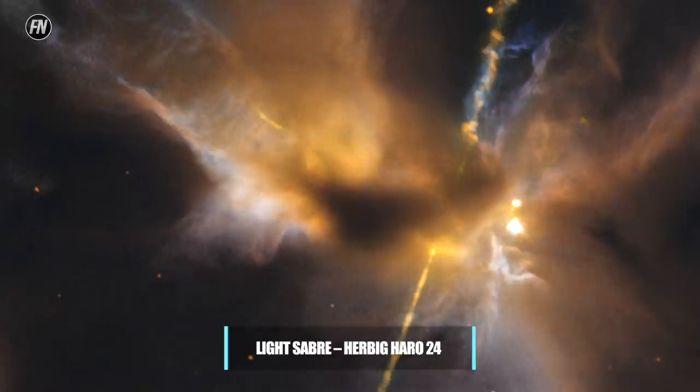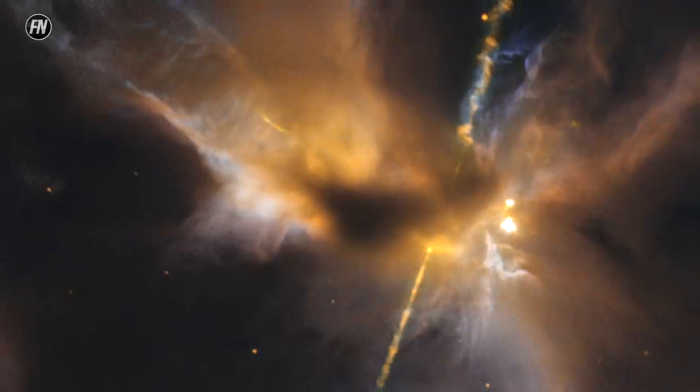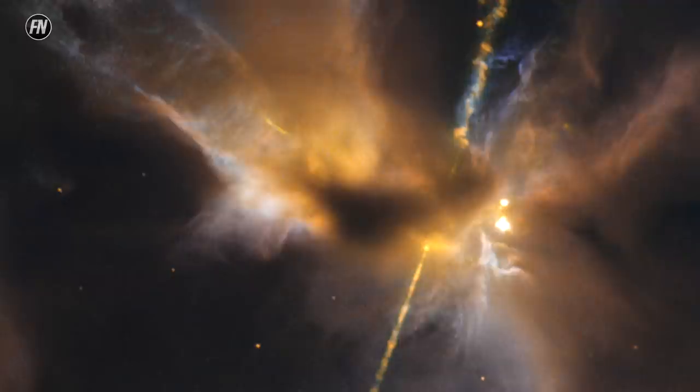Lightsaber, Herbig Haro 24. A young star within HH 24 is blazing hot, and although it's obscured by a Jedi's robe-shaped cloud of dust, it shoots out twin jets of superheated gas, looking almost exactly like a double-ended lightsaber.